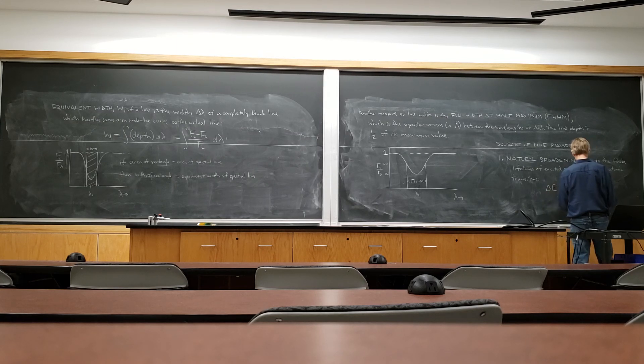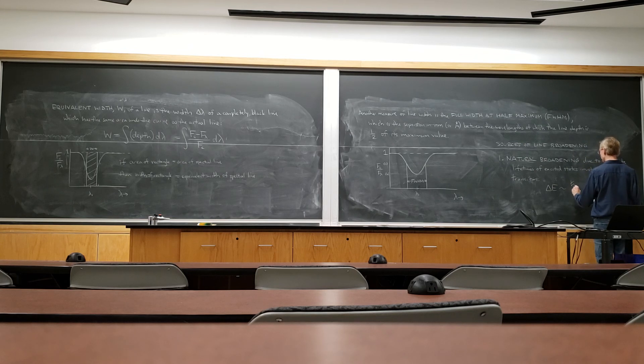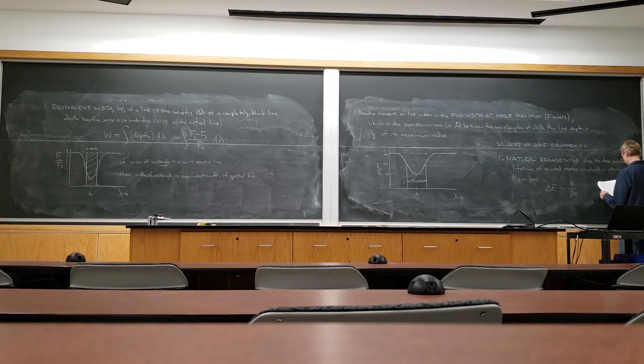And here we invoke the energy-time uncertainty principle, which again we mentioned before. The uncertainty in the energy is on the order of h-bar divided by the lifetime. Delta E is the uncertainty in an orbital's energy due to its finite lifetime delta t.